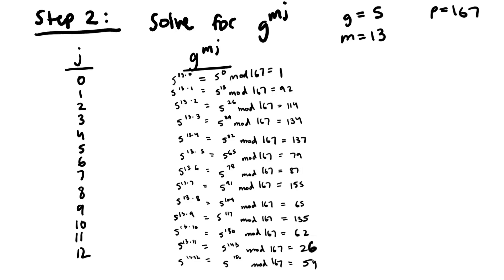So these are our final g to the mj calculations. And we have 1, 92, 114, 134, 137, 79, 87, 155, 65, 135, 62, 26, and 54.